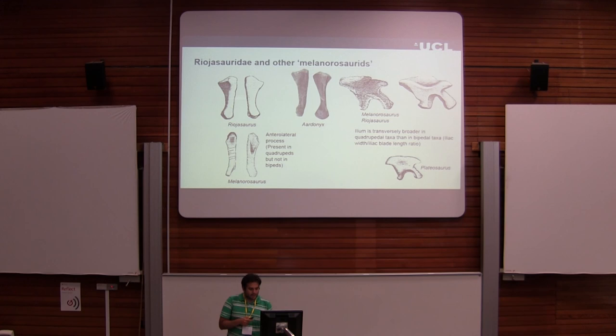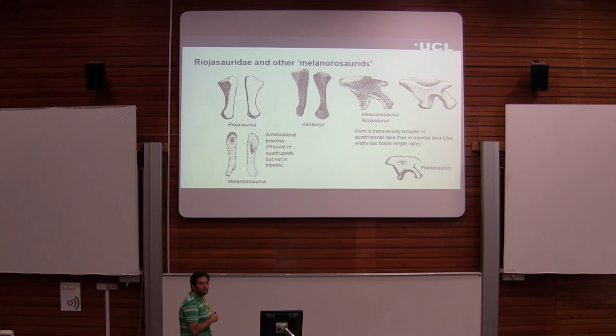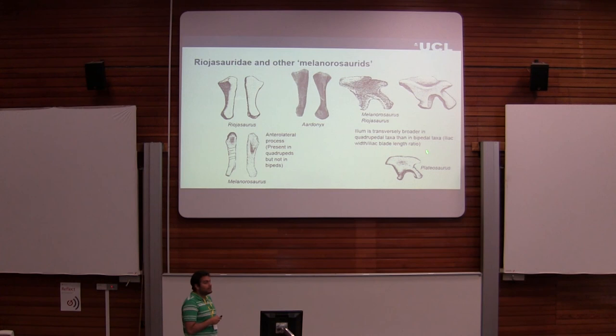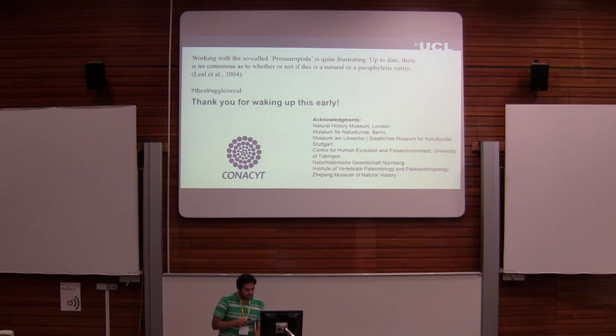That would mean quadrupedality evolved independently at least twice in prosauropods. Here you have some characters comparing Riohazaurus with Melanorosaurus, which is quadrupedal — you can see this characteristic present only in quadrupeds but not in bipeds. There's also this characteristic on the ilium. Interestingly, although these are quadrupeds, Plateosaurus — an obligate biped — had the same ilium feature as well.